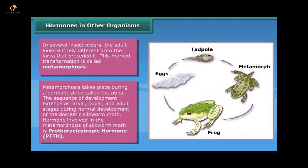Metamorphosis takes place during a dormant stage called the pupa. The sequence of development extends as larval, pupal and adult stages during the normal development of the domestic silkworm moth. The hormone involved in the metamorphosis of the silkworm moth is prothoracicotropic hormone, PTTH.